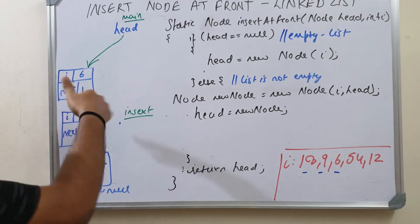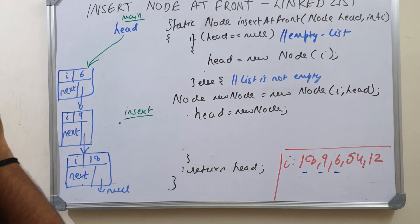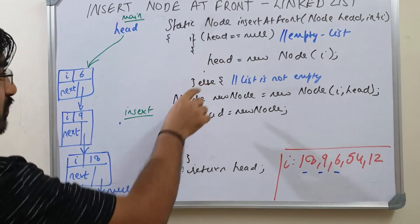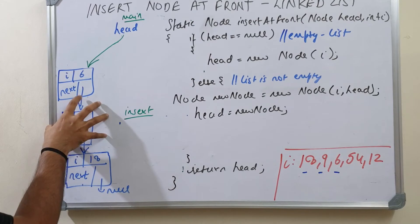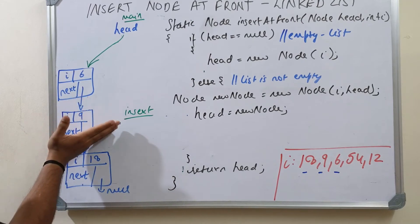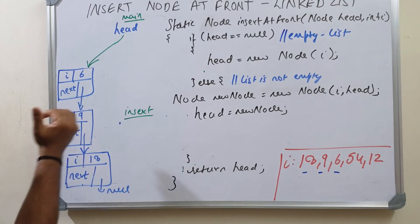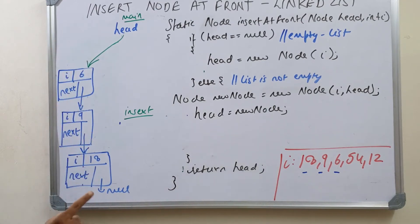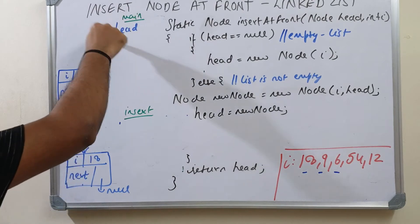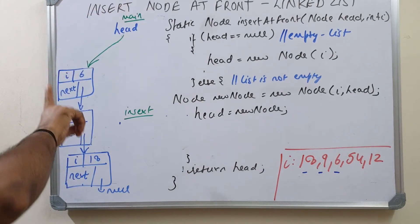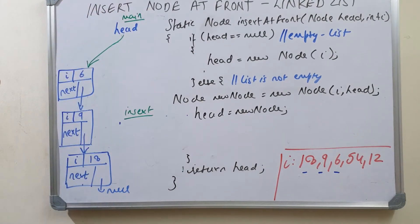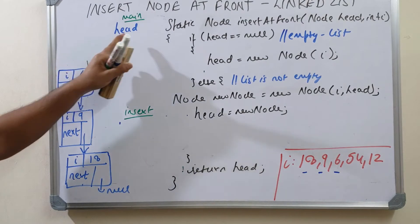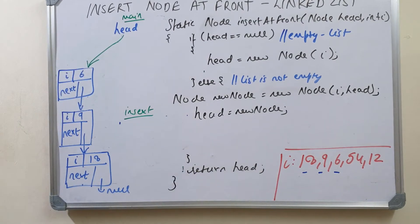So you can see the process: if head is null, we create a new head. If head is not null, we create a new node, set the next of this new node to head, and return the new head — because the head in main has to be updated to stay at the front of the list, pointing to the first node.